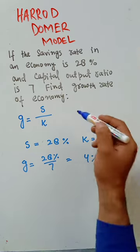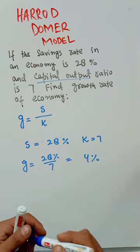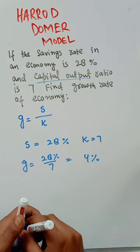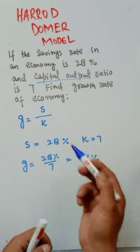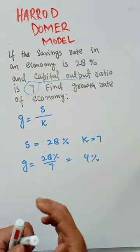By capital output ratio what we mean: it shows us the units of capital that are required to produce one unit of output, and it is here seven. So simple thing, growth rate in an economy in the Harrodian economy is equal to saving-income ratio divided by capital output ratio.